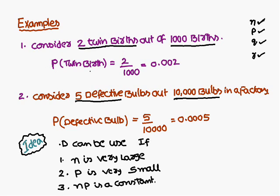From the first example, the probability of a twin birth is 2 out of 1000, which gives 0.002 — very close to zero. For the second example, the probability of a defective bulb is 5 out of 10000, which gives 0.0005 — also very close to zero. So when can the Poisson distribution be used? Now I have an idea.